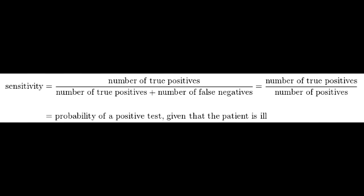Sensitivity — the true positive rate. Sensitivity is the proportion of all people with disease who test positive, or the probability that the test detects disease when the disease is present. Referring to the 2x2 table, it's the TP — when the test shows positive and the person also has the disease — that's the true positive.